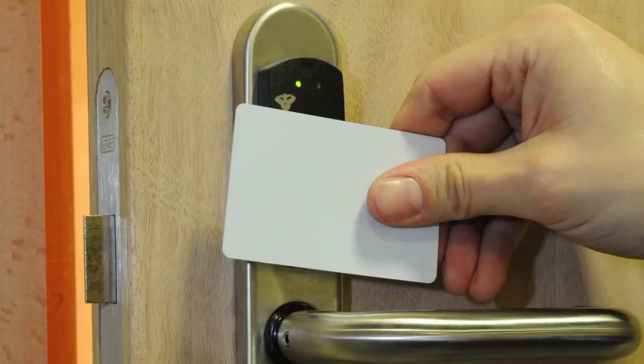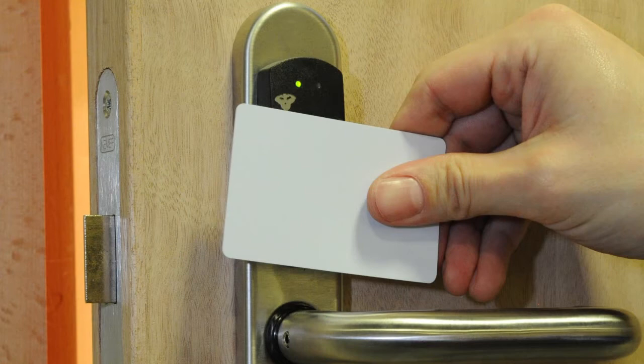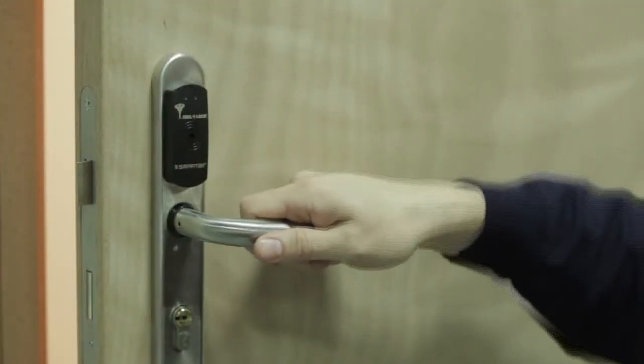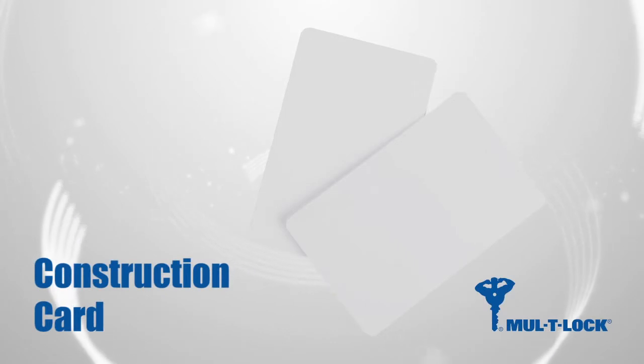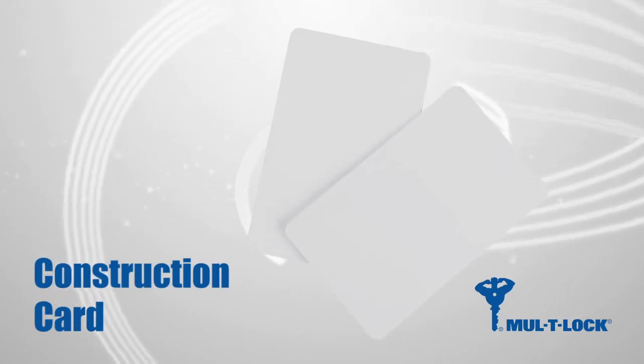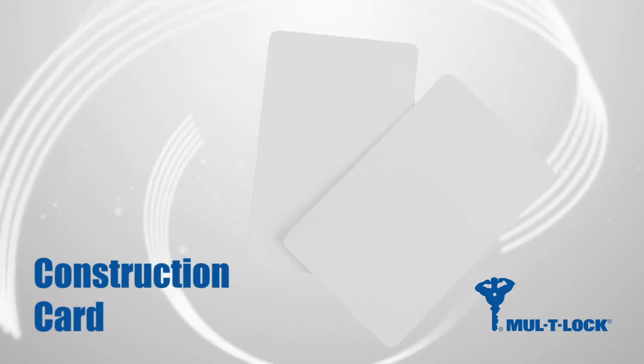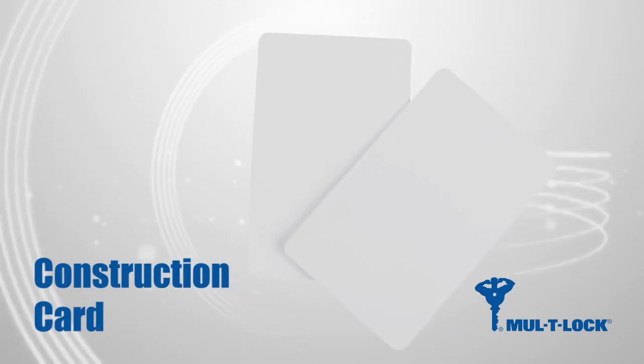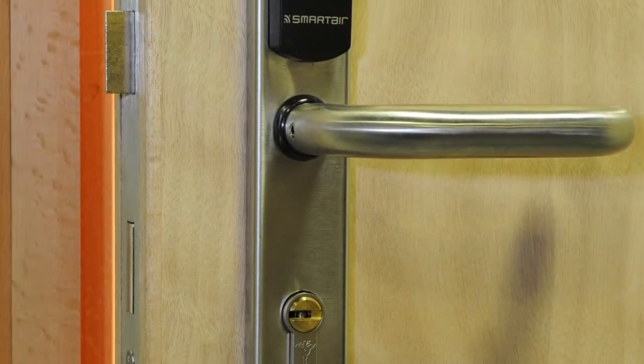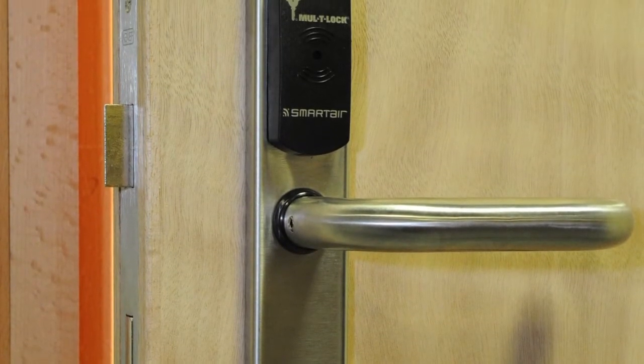To test the unit, press the white construction card from the box to the reader and check that the smart air unit operates the latch. The construction card is the same for all smart air units and can be used during construction to allow access for all users until the units are programmed. You have now successfully installed a smart air unit.